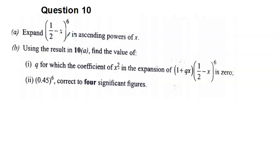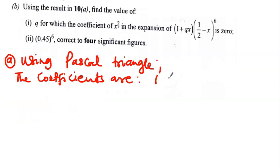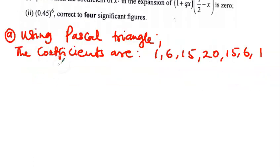For the first part, there was no condition to use the binomial theorem, so we can use Pascal's Triangle. Since the index is a positive integer, we can use Pascal's Triangle. The Pascal's Triangle coefficients for power six are: 1, 6, 15, 20, 15, 6, 1. Let's expand.